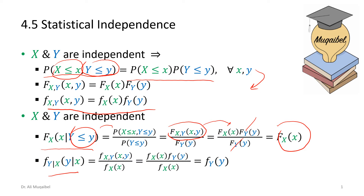The conditional PDF equals the joint PDF divided by the PDF of the conditioning variable. If they are independent, we can split the joint PDF into a multiplication, and we ultimately get F of Y. The conclusion is that, just like in probability, if the joint PDF or joint CDF equals the multiplication of the marginal ones, we call the two random variables statistically independent.